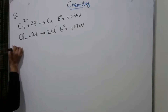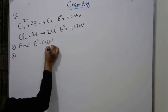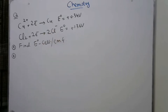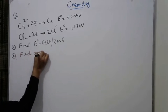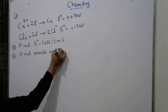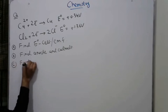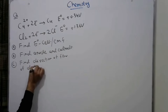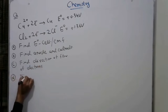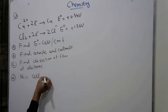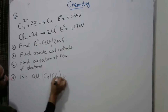Question 1 has multiple parts. Part A: find E° cell, that is, find the electromotive force (EMF). Part B: find anode and cathode. Part C: find the direction of flow of electrons. Part D: determine whether the copper-chlorine cell is possible or not.